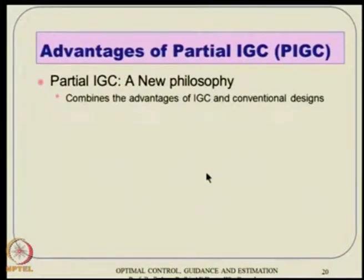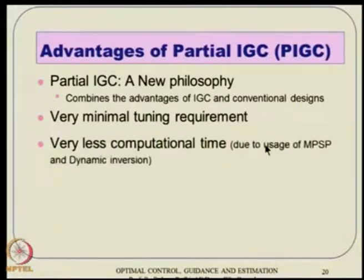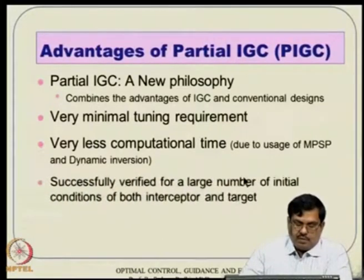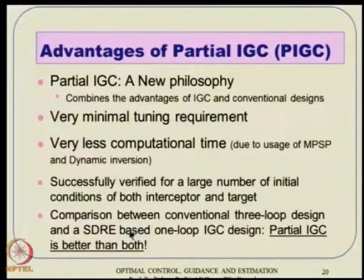Advantages of partial IGC: it is a new philosophy combining advantages of IGC and conventional design both. It has very minimal tuning requirement — a big advantage. In the IGC community, most designs have this tuning difficulty, but in PIGC we really do not. Very less computational time is also achievable. We propose MPSP or MPSC for the outer loop, and dynamic inversion for the inner loop — a non-linear control design approach. Successfully verified for a large number of initial conditions for both interceptor and target.